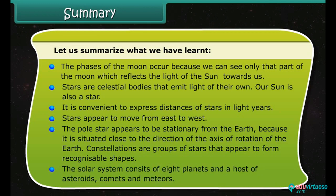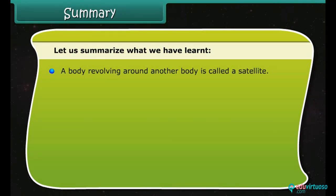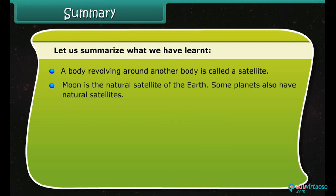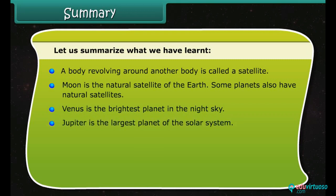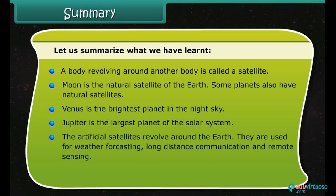A body revolving around another body is called a satellite. Moon is the natural satellite of the earth. Some planets also have natural satellites. Venus is the brightest planet in the night sky. Jupiter is the largest planet of the solar system.